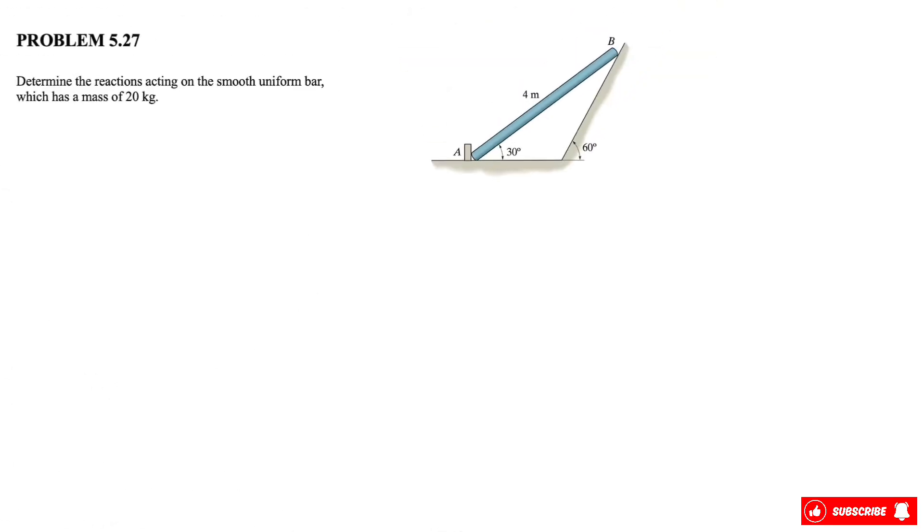All right guys, welcome back. We need to determine the reactions acting on this smooth uniform bar which has a mass of 20 kilograms. So another question about equilibrium and we're going to start with the free body diagram.